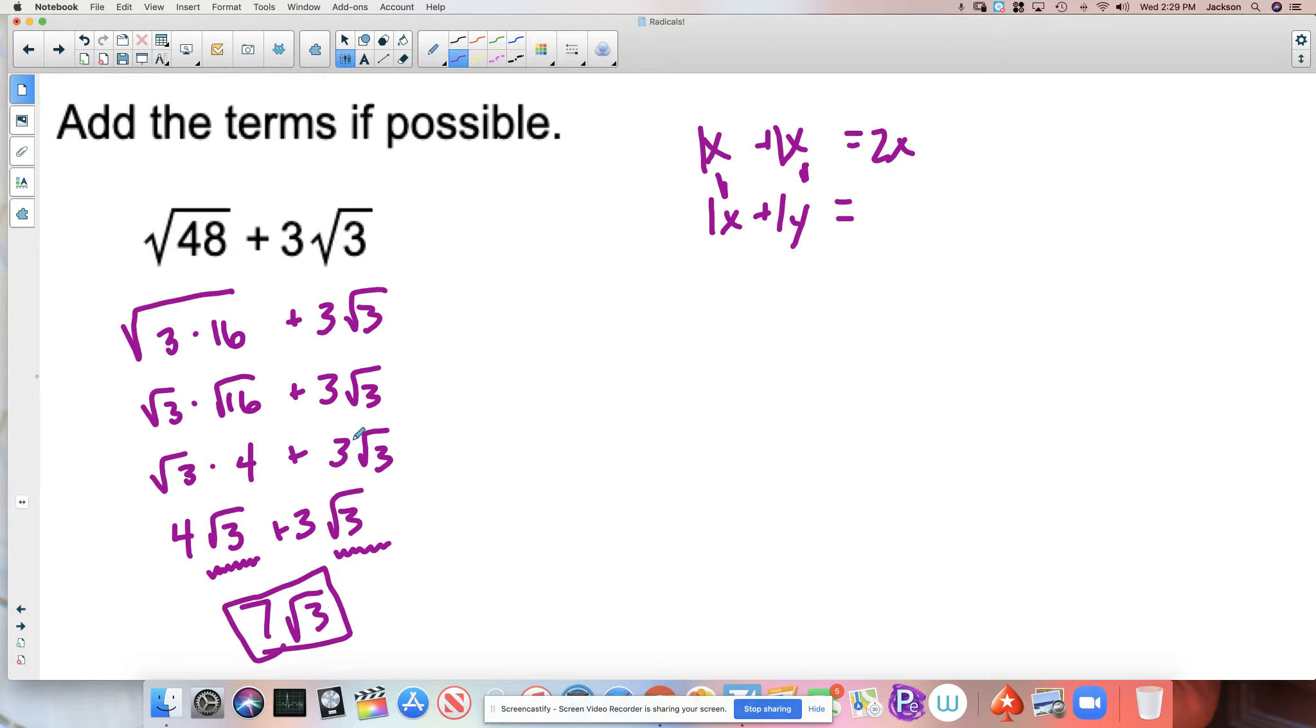So we can add radicals if the radicand—remember that number that's underneath here is called the radicand—if the radicands are the same, we can add and subtract the values that are in front of those.